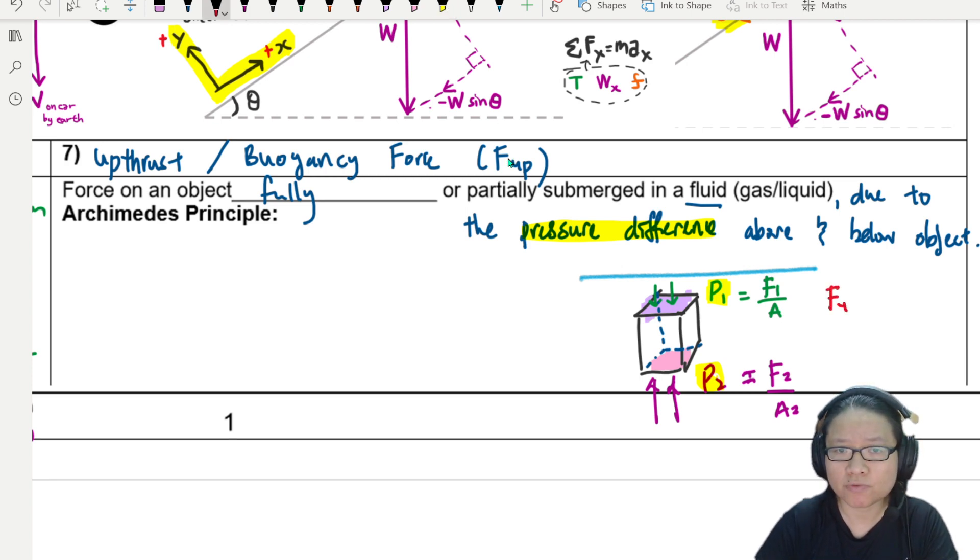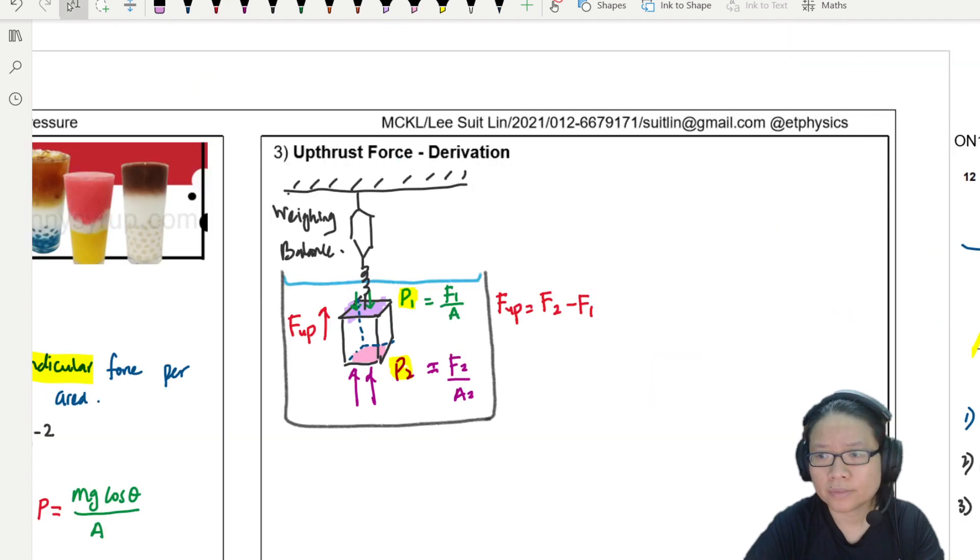All right. So it is the pressure difference between P1 and P2 that causes the net uptrust. So the uptrust force is actually equal to F2 minus F1. So you get a net uptrust force if you subtract these two values. With this, we are going to derive an equation to find uptrust.